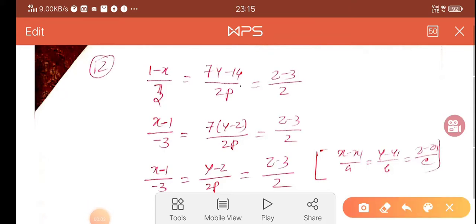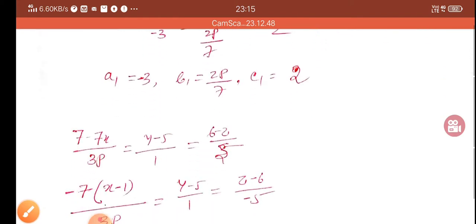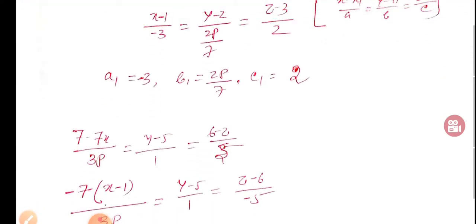I have two lines in question number 12. The first is (1-x)/3 = (7y-14)/(2p) = (z-3)/2, and another line that is (7-7x)/(3p) = (y-5)/1 = (6-z)/5.